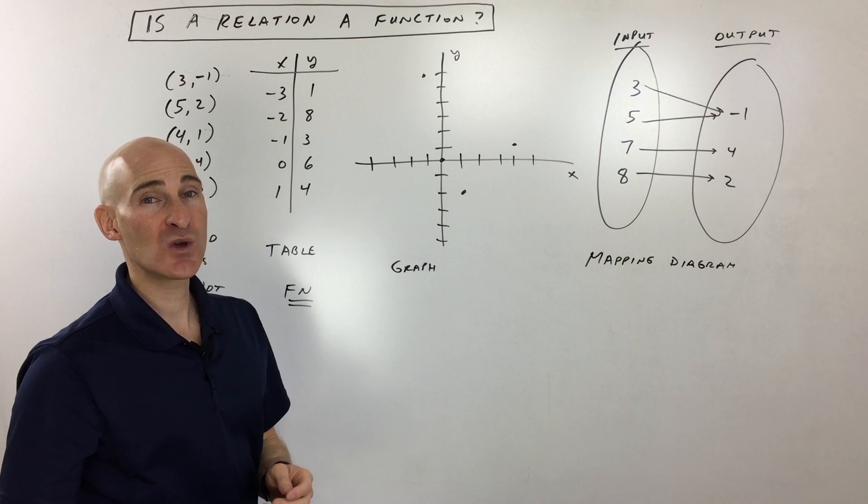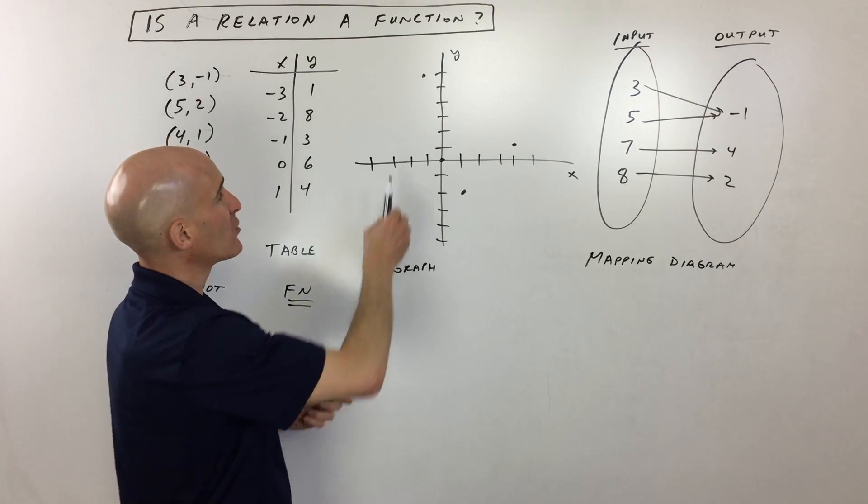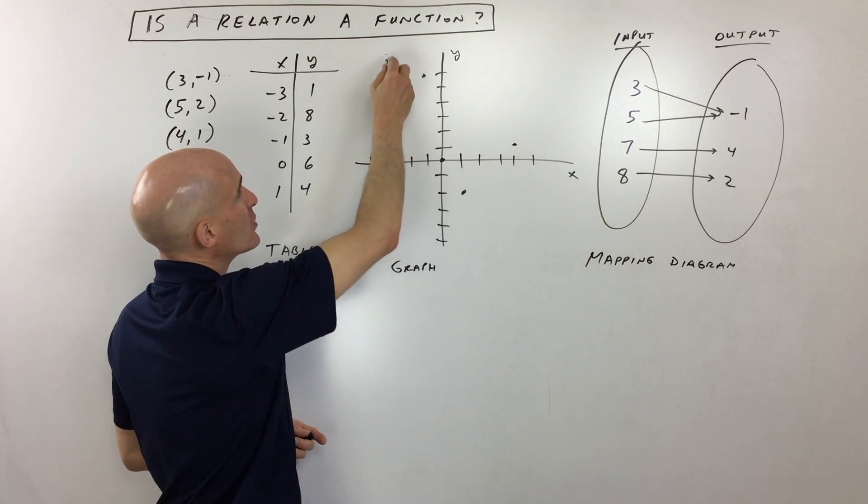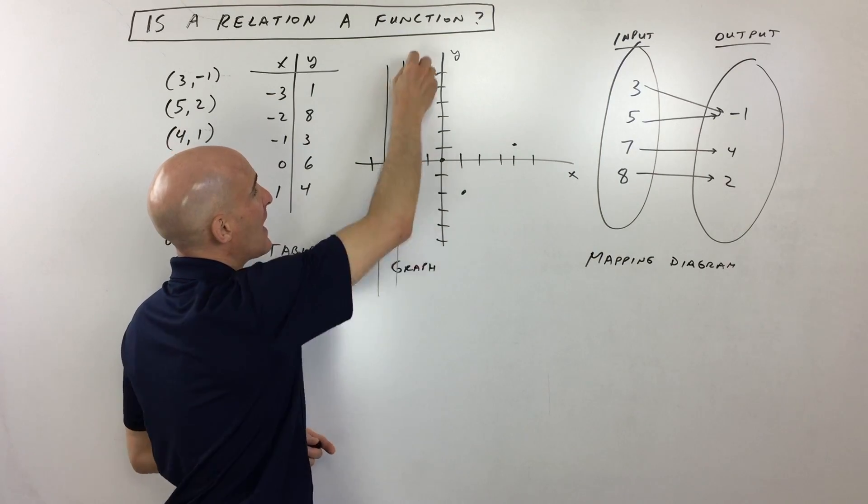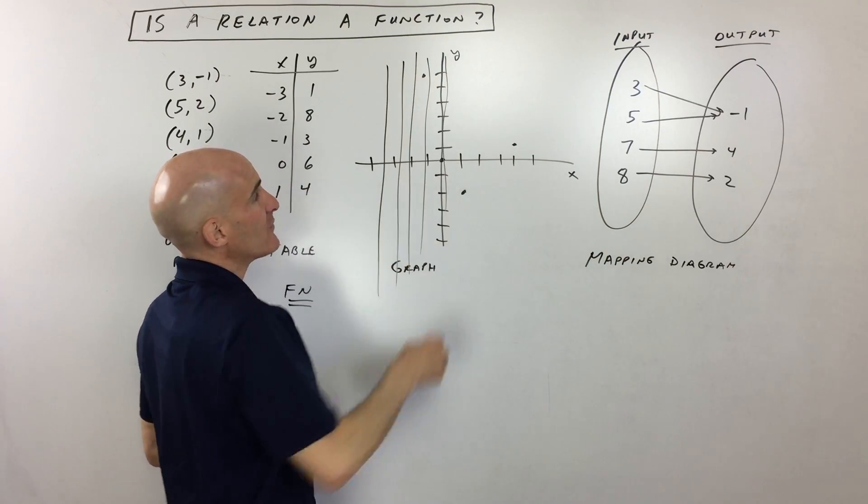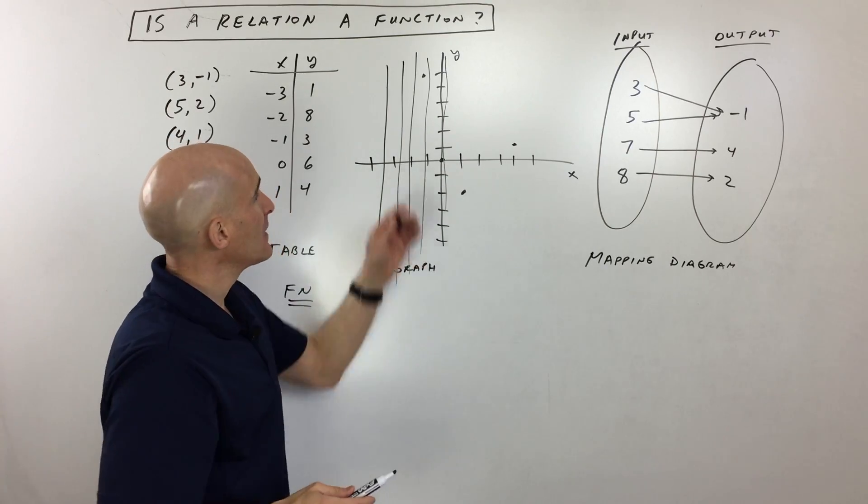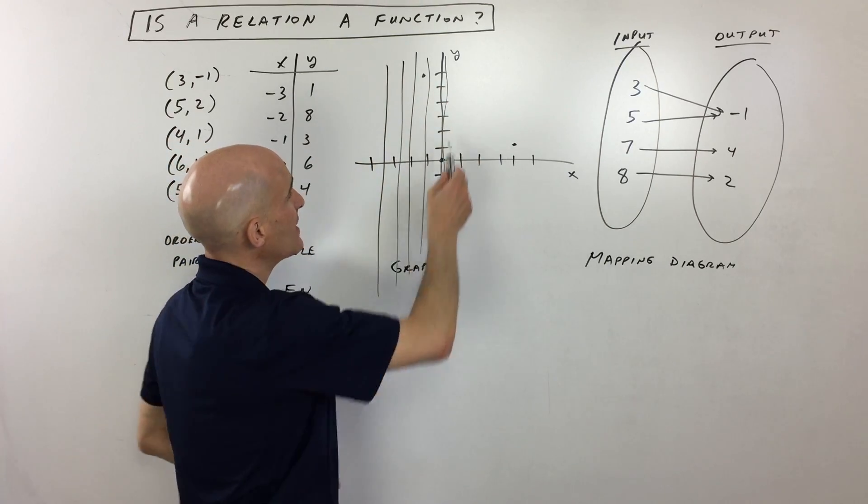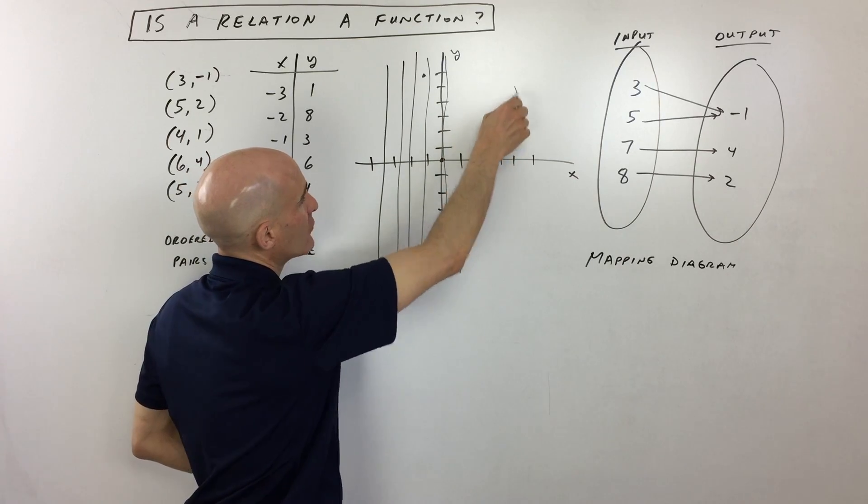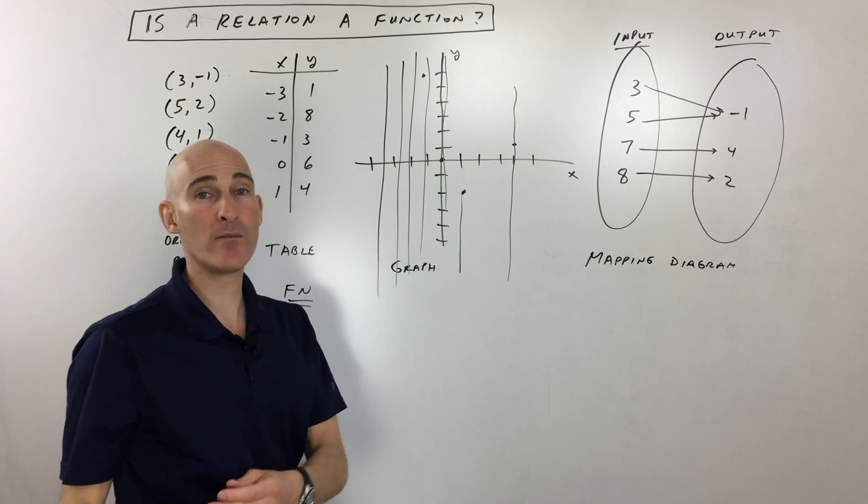Now, when you're looking at a graph, a nice way to check to see if it's a function is to do something called the vertical line test. What you do is you draw a bunch of these vertical lines, and what you're doing is you're seeing if it crosses more than one point for a given vertical line. Now, when you scan across here, you can see that's never the case. Every time I draw a vertical line, it's only crossing at most one point.